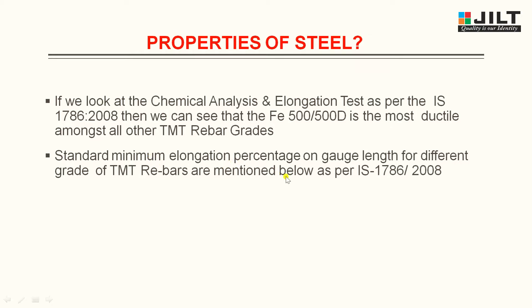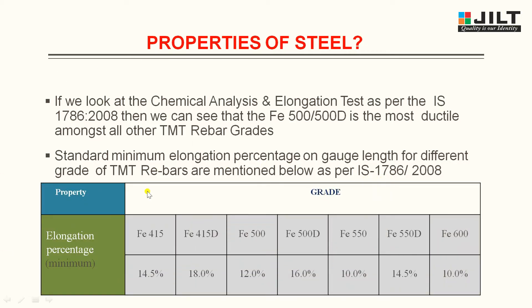Standard minimum elongation percentage on gauge length for different grades of TMT rebars as per IS 1786-2008: FE415 is 14.5%, FE415D is 18%, FE500 is 12%, FE500D is 16%, FE550 is 10%, FE550D is 14.5%, and FE600 is 10%.